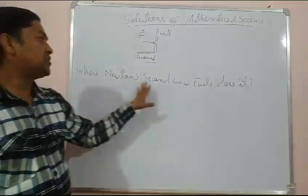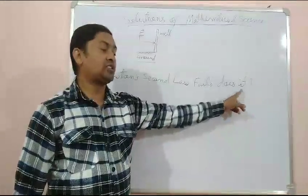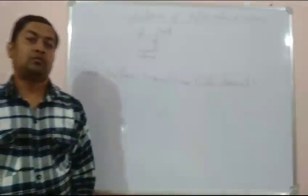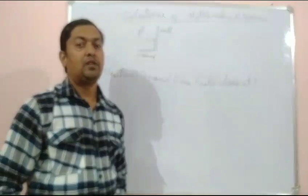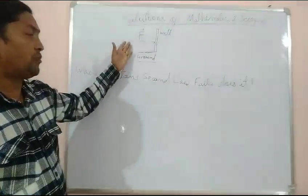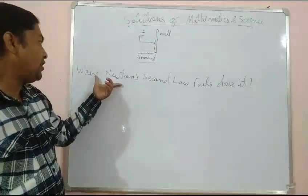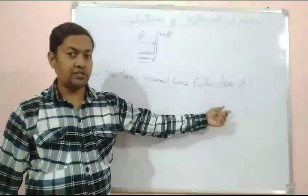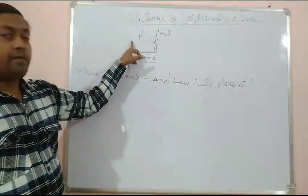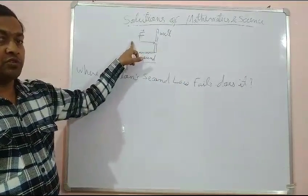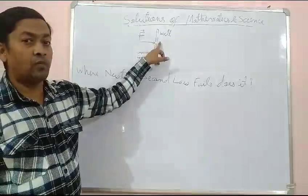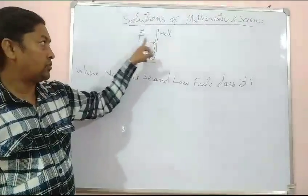Where does Newton's Second Law fail? Does it? To see this, suppose I create a situation where Newton's law appears to fail. Consider a non-zero force F applied on a rigid wall, so the force is non-zero.